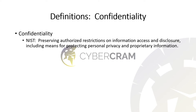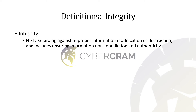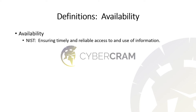The National Institute of Standards and Technology defines confidentiality as preserving authorized restrictions on information access and disclosure, including means for protecting personal privacy and proprietary information. Integrity is defined by NIST as guarding against improper information modification or destruction, and includes ensuring information non-repudiation and authenticity — focus on the word modification. Availability is defined by NIST as ensuring timely and reliable access to and use of information.